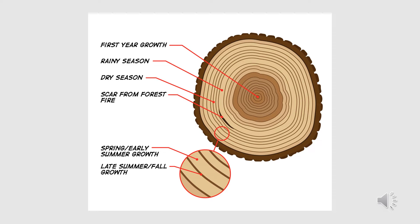We can see the changes in growth by looking at the width of the tree rings. A wide tree ring mainly represents a hot and rainy year. A thin tree ring represents a cold and dry year. For example, a tree can be old but very skinny. This is because its environment is cold and dry each year, leading to thin rings.